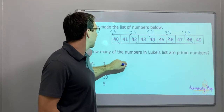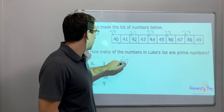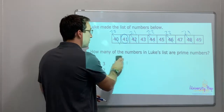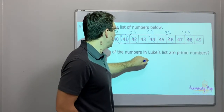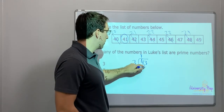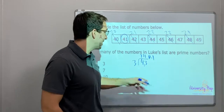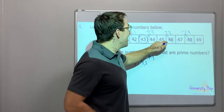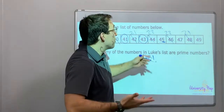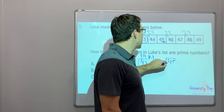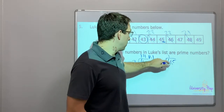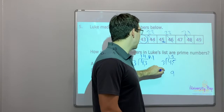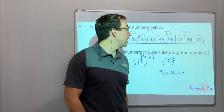Is 41 divisible by 3? No — 3 times 13 is 39, 3 times 14 is 42 — so 41 is not divisible by 3, it's prime. What about 43? 43 divided by 3 is 14 remainder 1 — so 43 is prime. What about 45? It ends in 5, so it's divisible by 5 — 45 divided by 5 is 9, or 45 divided by 3 is 15. So 45 is not prime.